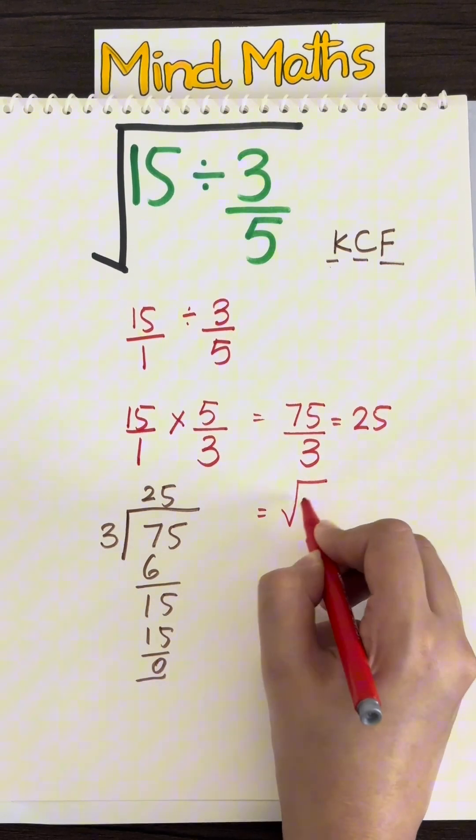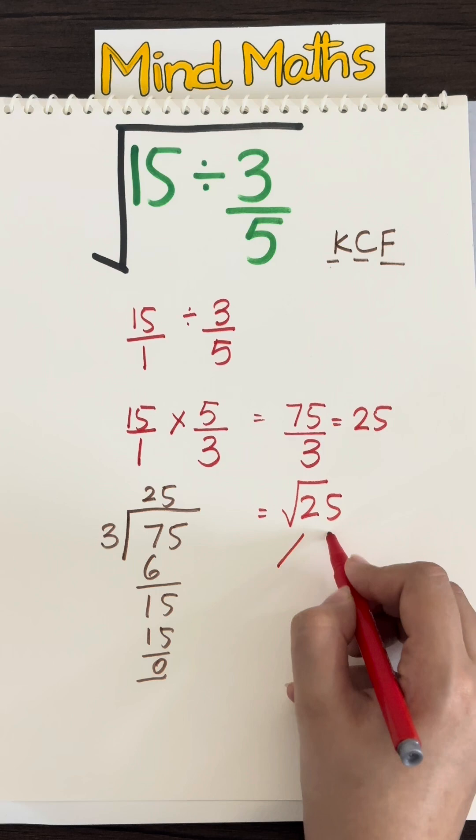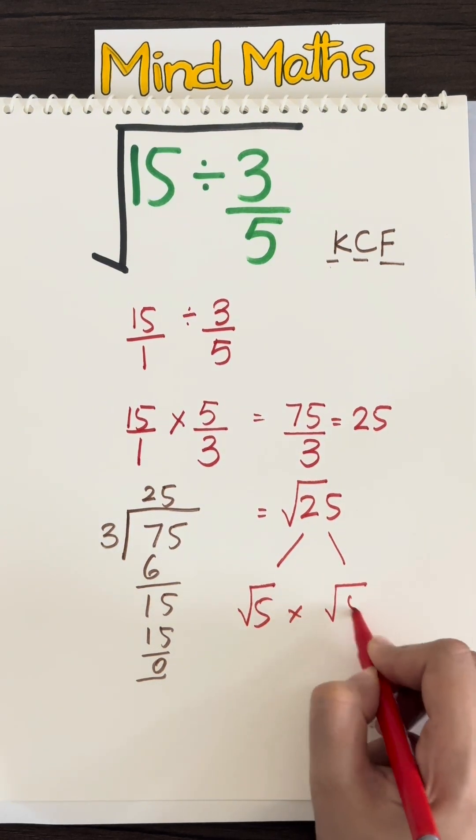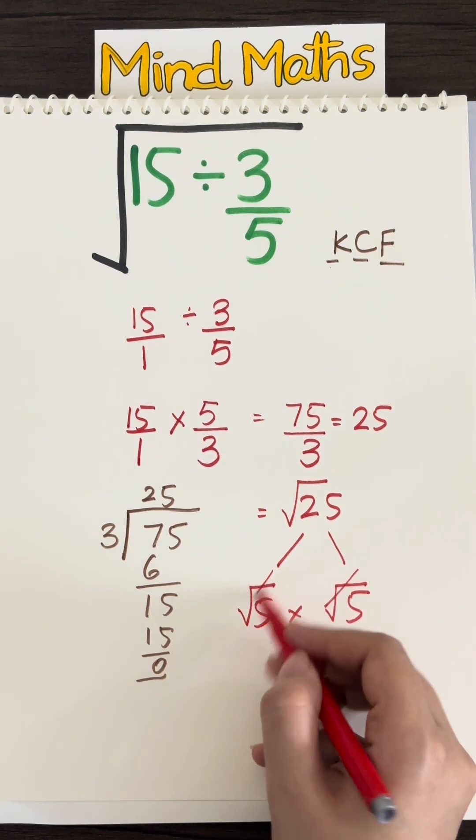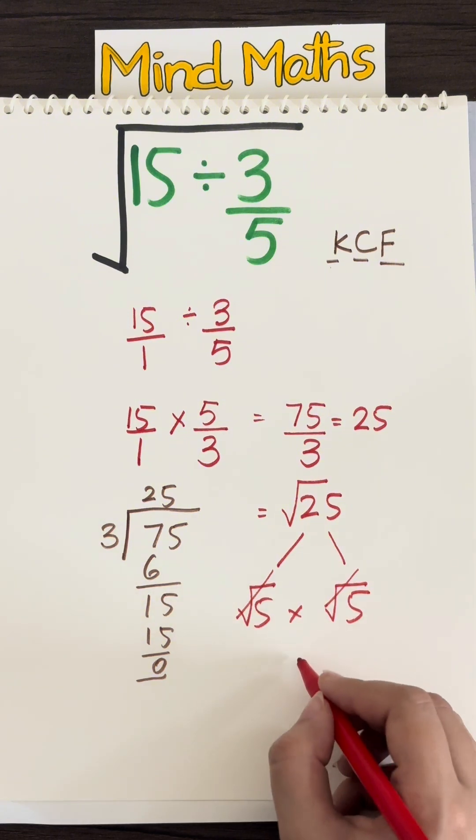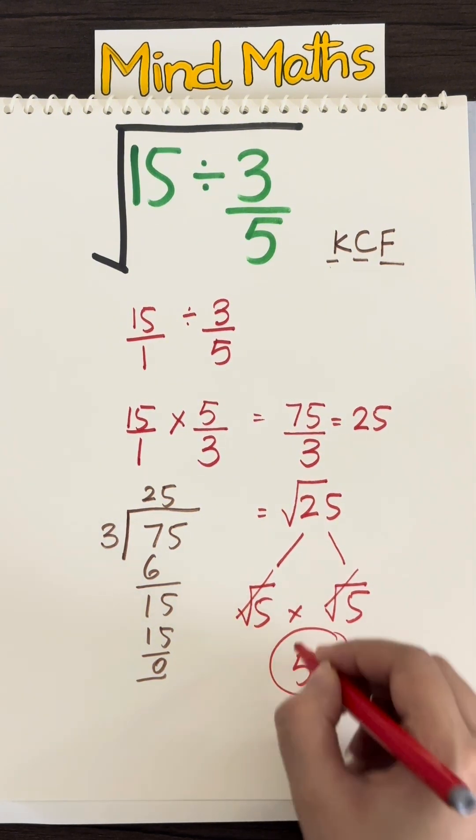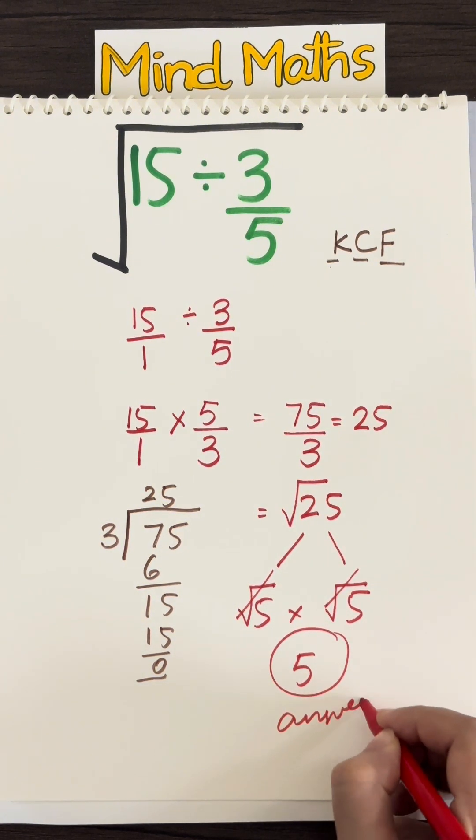Now we need to take the square root of 25. This is pretty easy because this is just equal to square root of 5 times the square root of 5. Further, these two square roots cancel with each other. Now taking what's inside one common which is just 5, and that's our answer.